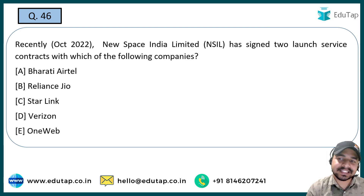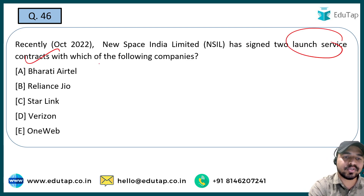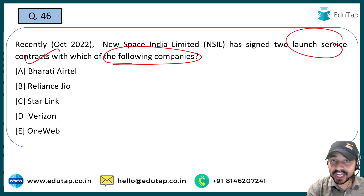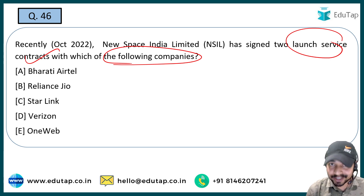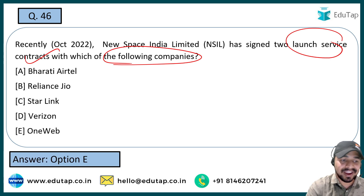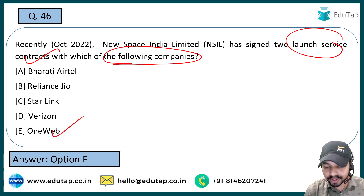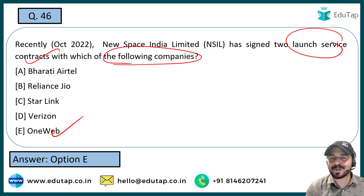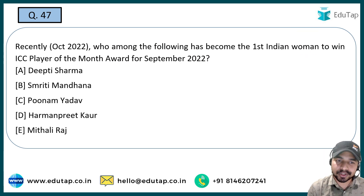The next question: New Space India Limited has signed two launch service contracts with which of the following companies? This particular agreement has been signed for launch service contracts. The right answer is OneWeb. This is a very probable question which can be asked in the upcoming RBI Grade B exam.